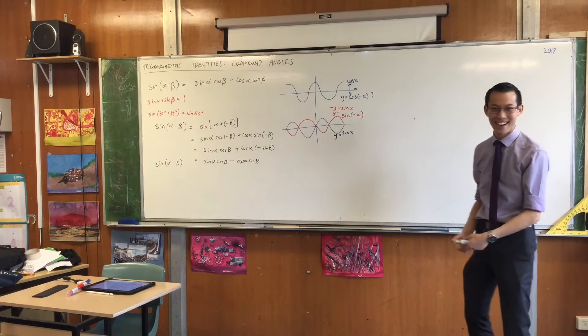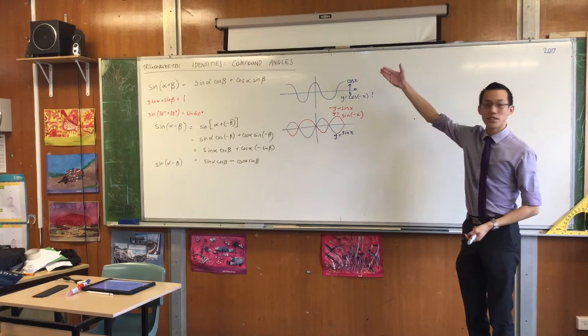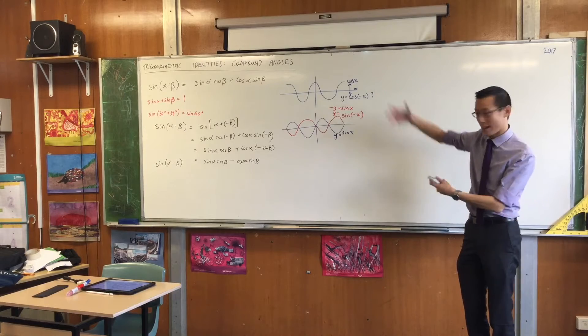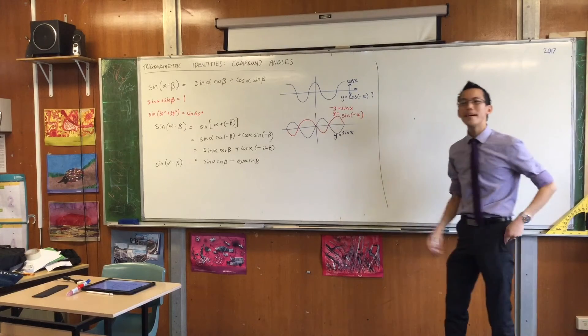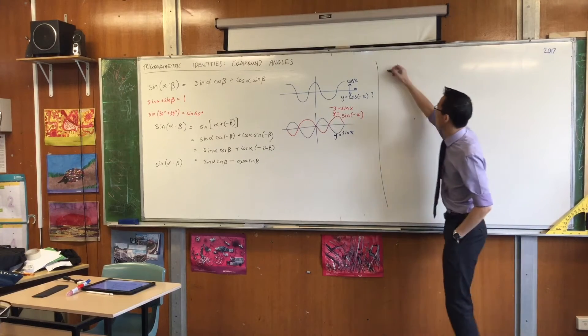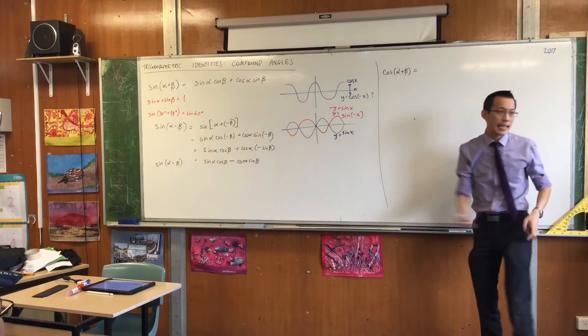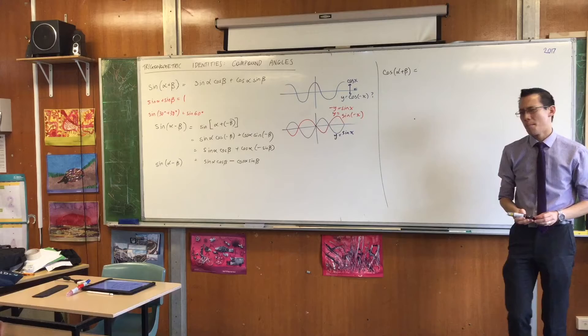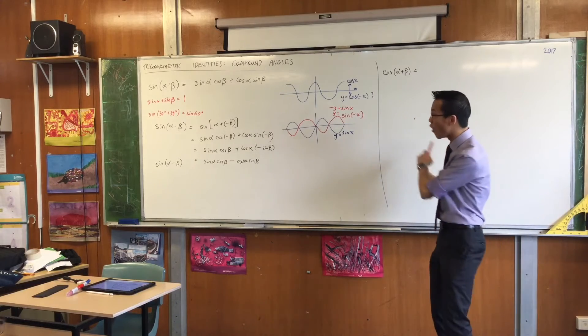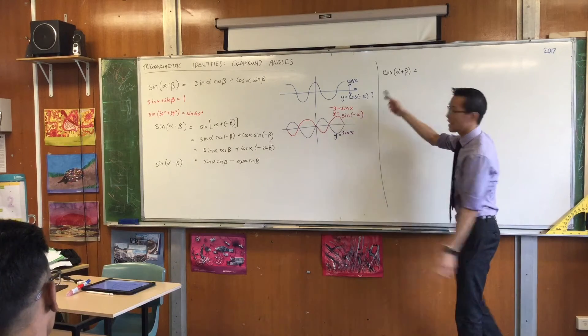Okay, so then I said there were more, right? So I've done the sum and difference for sine. How am I going to do the sum and difference for cos? Now again, you can prove this in all kinds of different ways, but if I can I want to use what I already know to get me to this.